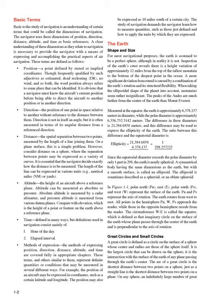Basic Terms. Basic to the study of navigation is an understanding of certain terms called the dimensions of navigation. The navigator uses these dimensions of position, direction, distance, altitude, and time as basic references. A clear understanding of these dimensions as they relate to navigation is necessary to provide the navigator with the means of expressing and accomplishing the practical aspects of air navigation. Position is a point defined by stated or implied coordinates. The word position always refers to some place that can be identified. A navigator must know the aircraft's current position before being able to direct the aircraft to another position or direction.